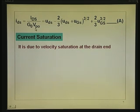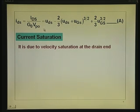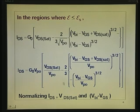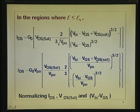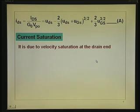Ids normalized by G0·Vp0 equals Uds — which is VdSat/Vp0 — minus two-thirds of (Uds + Ugs)^(3/2), plus two-thirds of (Ugs)^(3/2). All that we have done is normalize with respect to Vp0. The whole half-page equation is now a single line, and the identity is maintained. You can write simpler equations in a simpler form by normalizing.